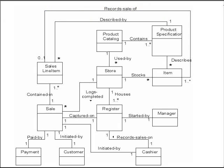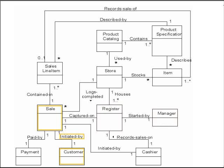We can now add associations to our retail store domain model. This partial domain model shows a set of conceptual classes and associations, primarily derived from the common categories of finding associations. For example: the sale is entered by the cashier; the register is used by the cashier; the register is assigned to a particular cashier by a manager; the sale is initiated by the customer; the store stocks items in its inventory; and the sales line item records the sale of a single item within the sale.